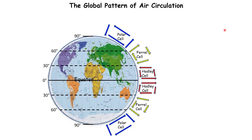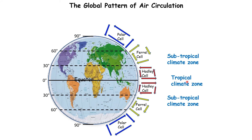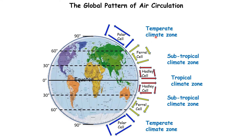Each of these areas where air rises or sinks is known as a different climate zone. At 0 degrees is the tropical climate zone. At 30 degrees north and south, where the deserts are, we call them the subtropical climate zones. At 60 degrees north and south are the temperate climate zones, like Britain, where we have a lot of rain and four seasons during the year. And finally, to the very north and south, we have the polar climate zones.